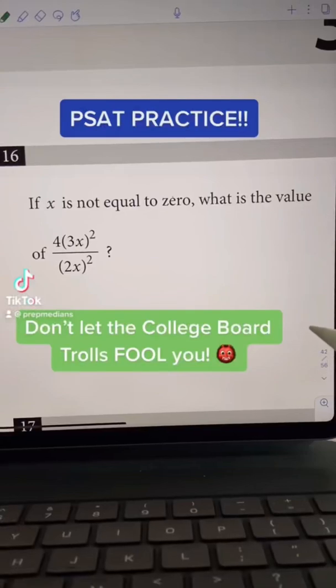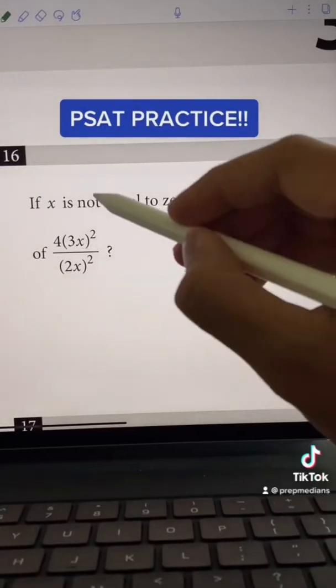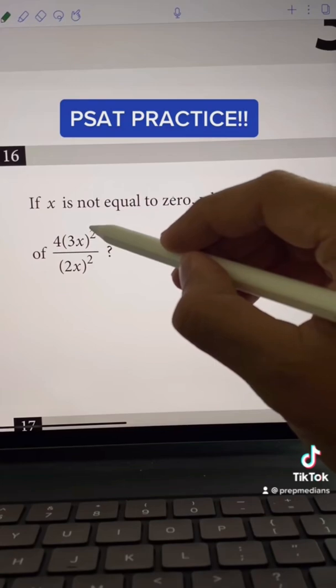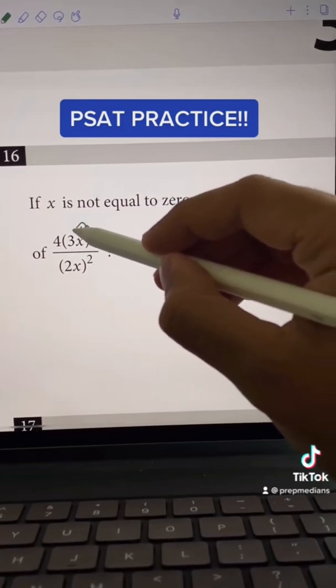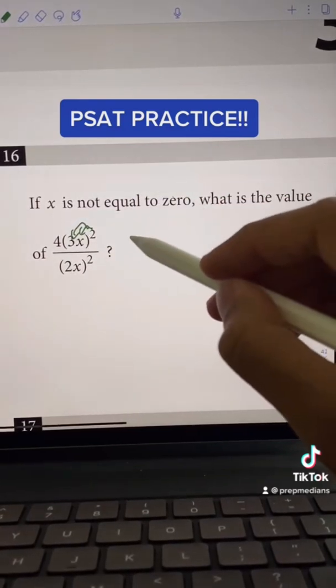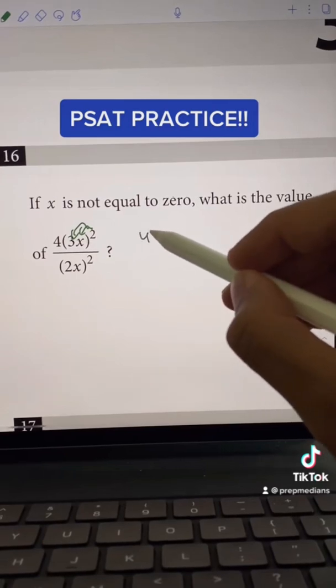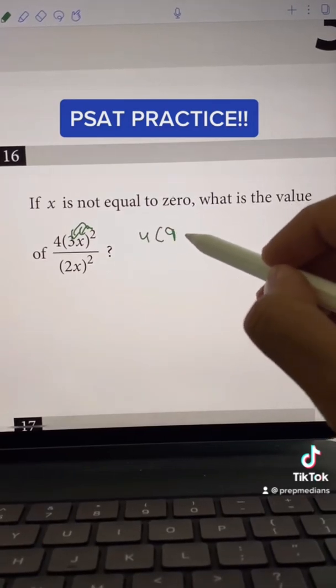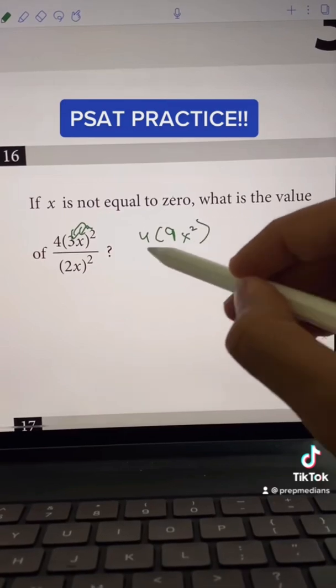Don't let the Trolls of College Board fool you with a question like this. When we have exponents outside of parentheses, we need to make sure to distribute that exponent to both things inside the parentheses. In doing so, the numerator here becomes 4 times 3 squared, which is 9, times x squared, which is x squared.